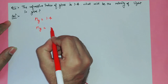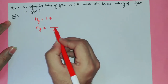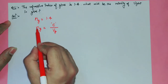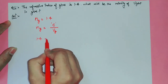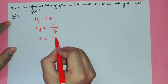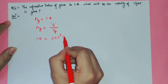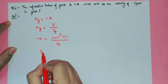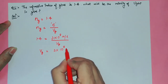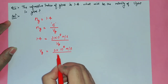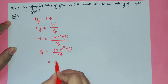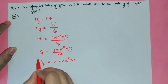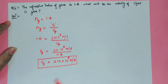The refractive index can be written as the speed of light in air divided by the velocity of light in glass. The speed of light in air is always c. So, the absolute refractive index is 1.4, and the speed of light in air is 3×10⁸ m/s. From here, the velocity of light in glass = 3×10⁸ / 1.4 = 2.14×10⁸ m/s.